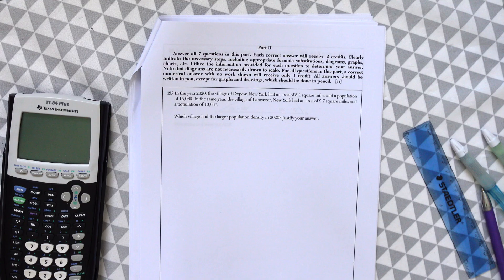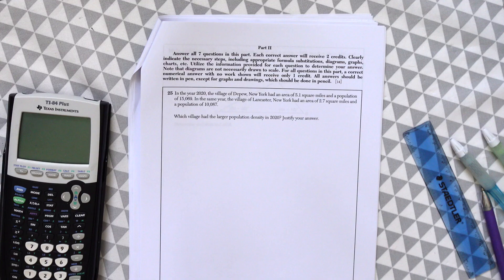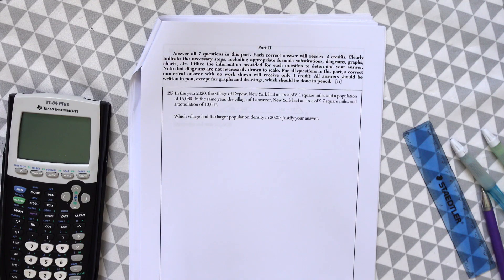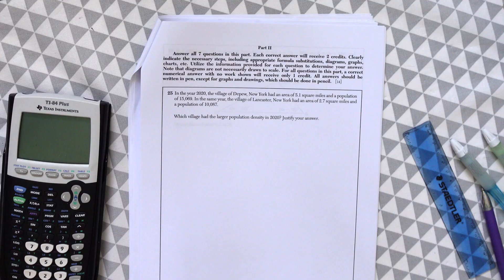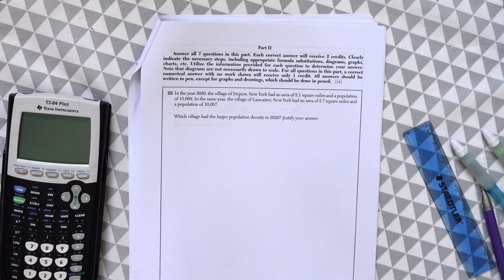In the year 2020, the village of Depew, New York had an area of 5.1 square miles and a population of 15,069 people. In the same year, the village of Lancaster, New York had an area of 2.7 square miles and a population of 10,087 people. Which village had the larger population density in 2020? Justify your answer.